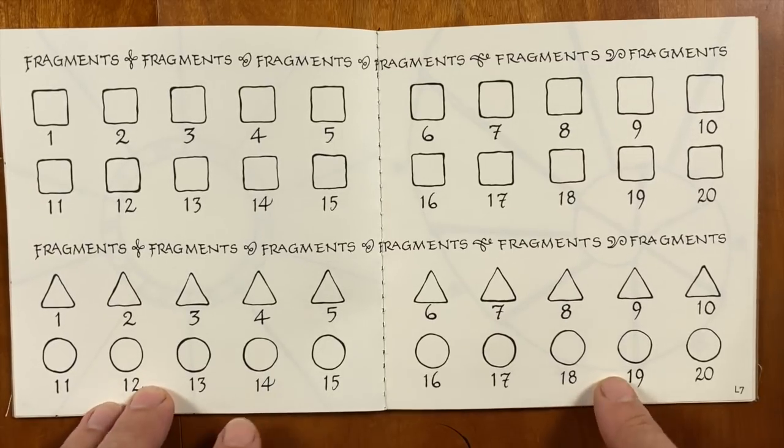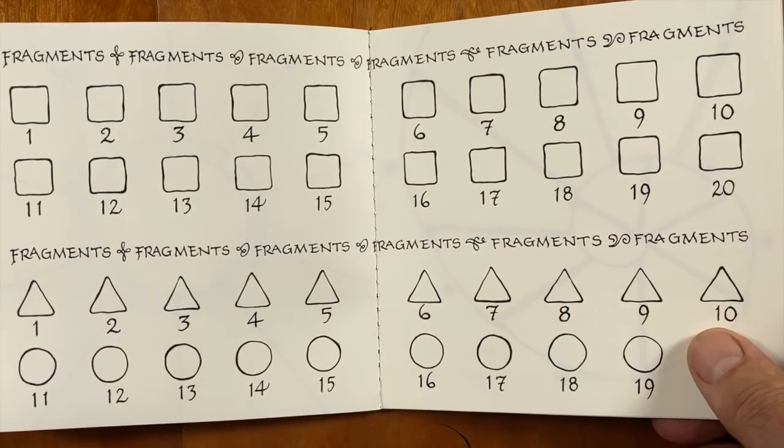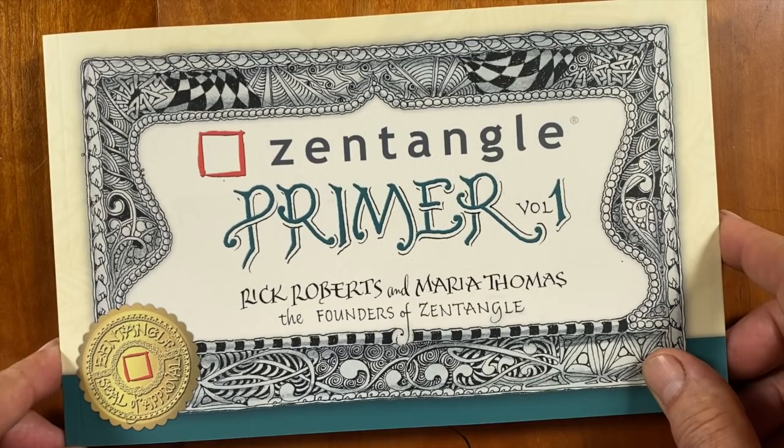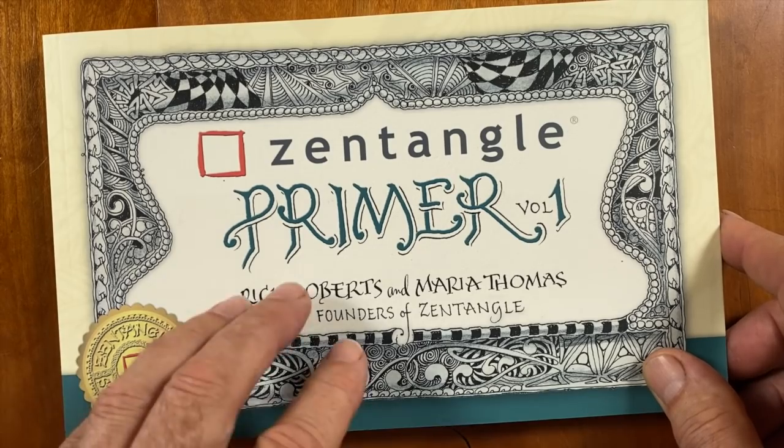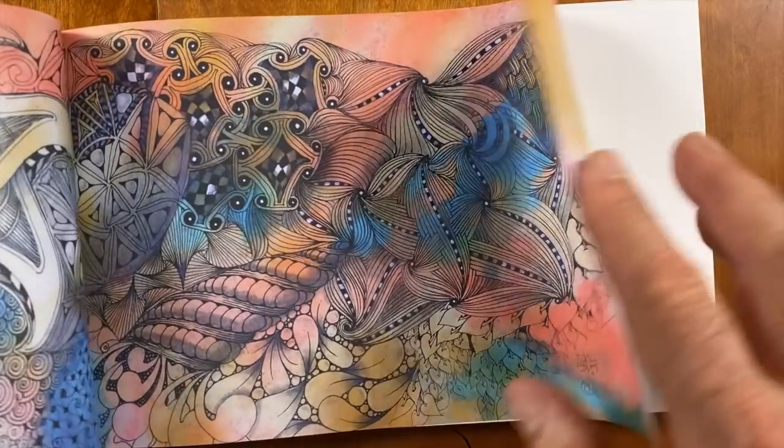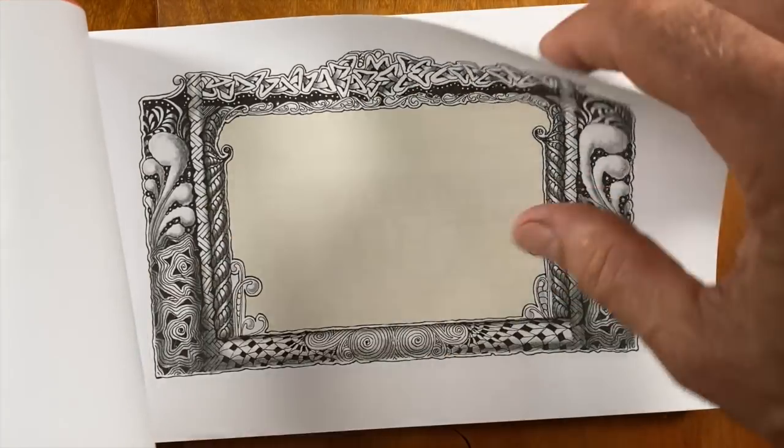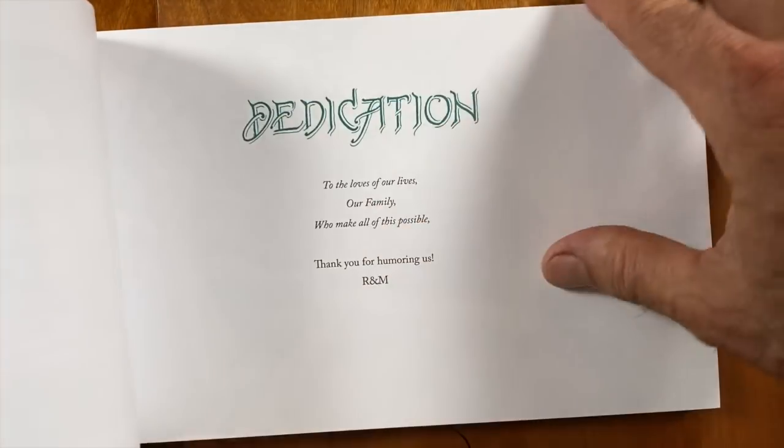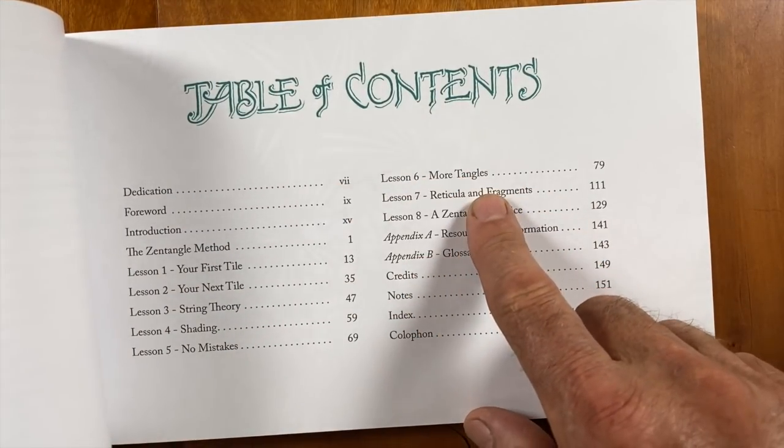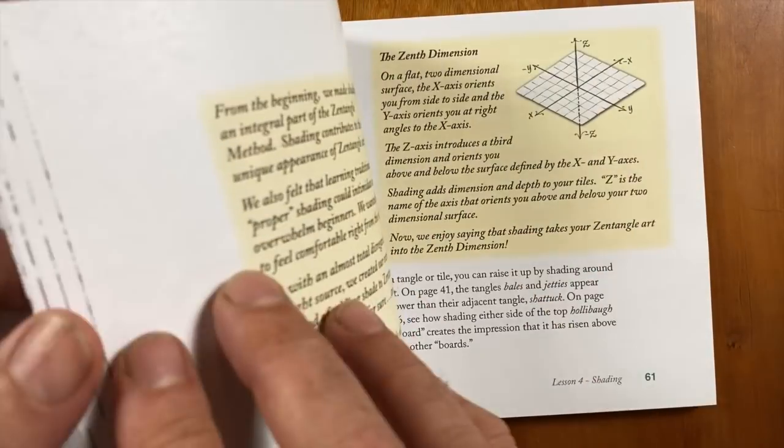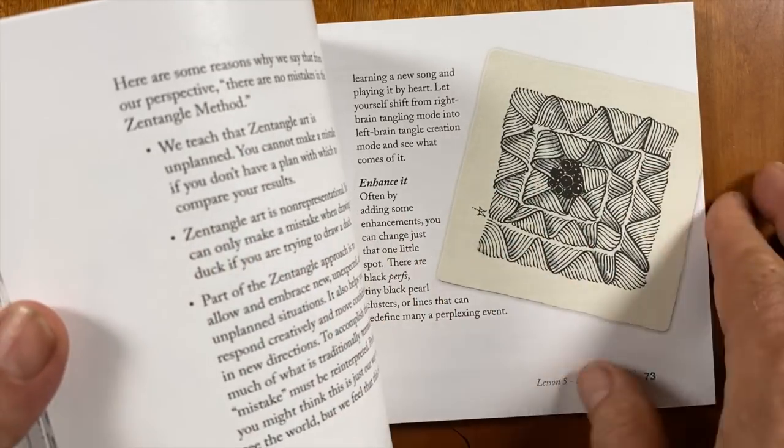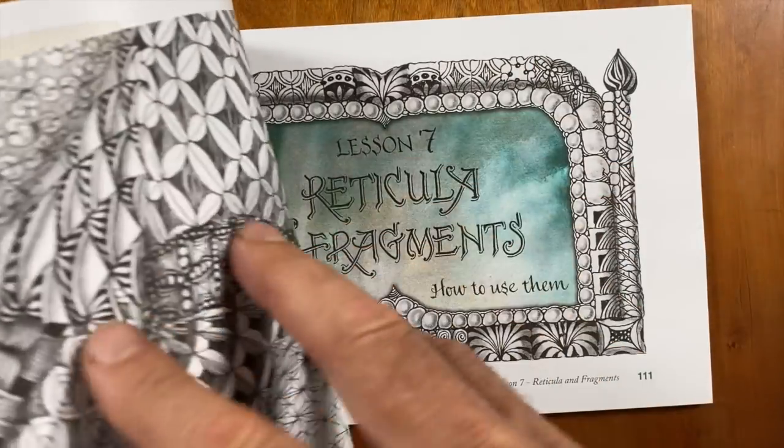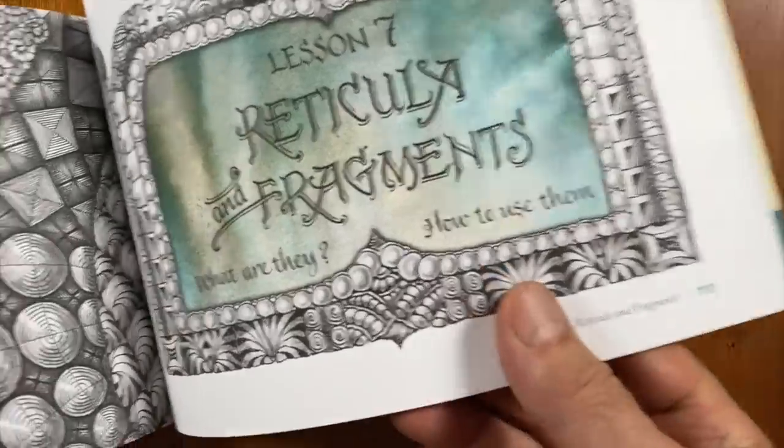We're going to work with fragments and reticula. This is a concept that we came up with when we brought our Primer Volume 1 out. It was the coup, such a great thing to add. It was a great way to explore tangles, to take a small little snippet and then isolate that. You don't have to design a big tangle, all you have to do is design this tiny little square, and then you can put it together in different ways.